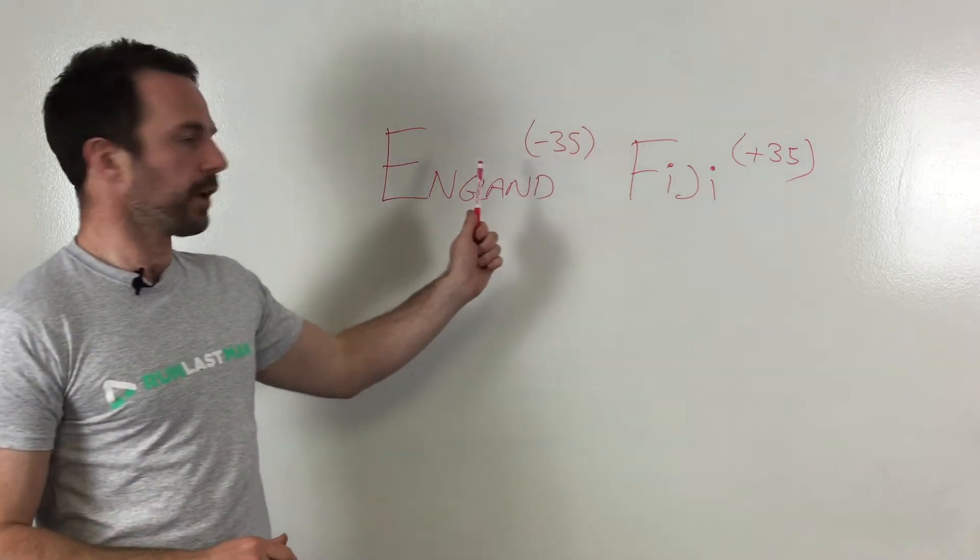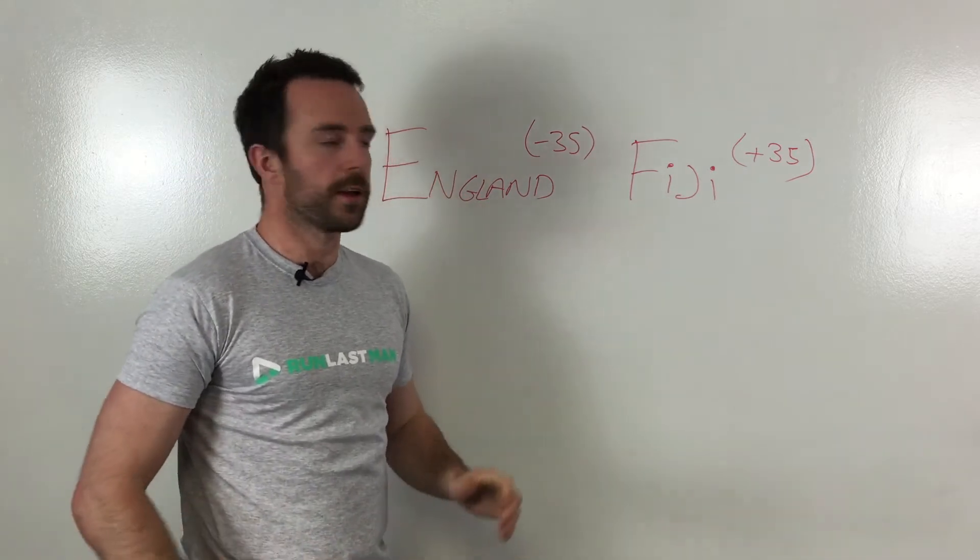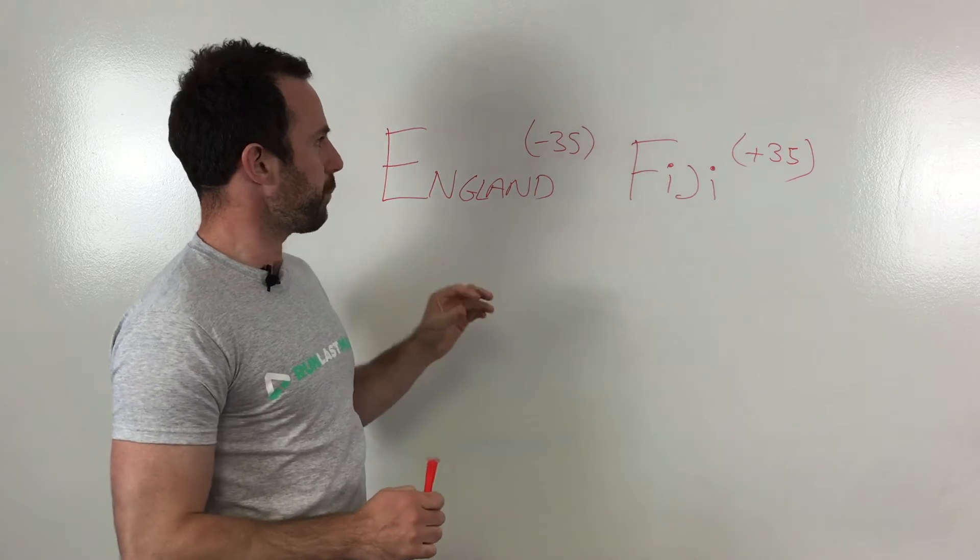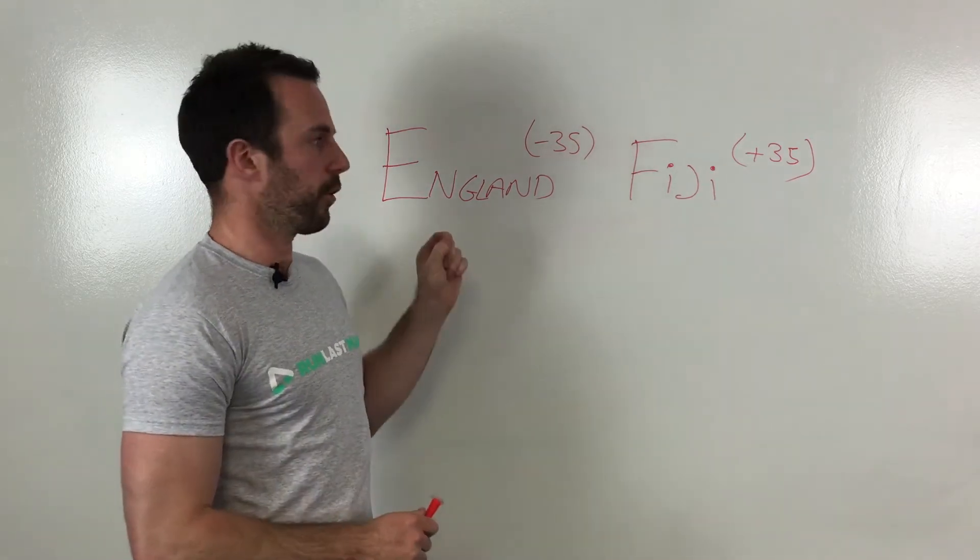So if you're very confident in England and they're going to absolutely smash Fiji, get the World Cup off to a huge performance, go for England. That means if England win by more than 35 points, you're a winner.